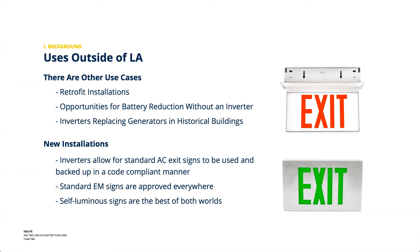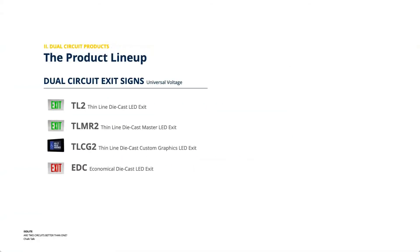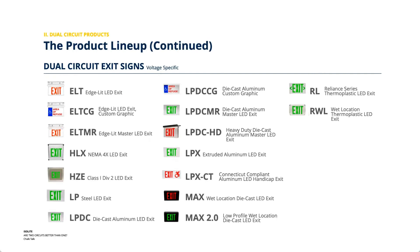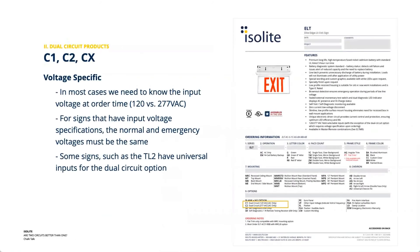The good news is we have lots of products that support dual circuit. We have universal voltage dual circuit exit signs like our Thin Line series and the EDC, and voltage-specific versions across the rest of the product line — from the super-architectural ELT all the way down to the value series RL thermoplastic exit sign. If you need an exit sign, we're going to have a dual circuit version of it.